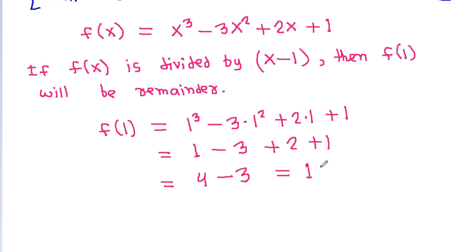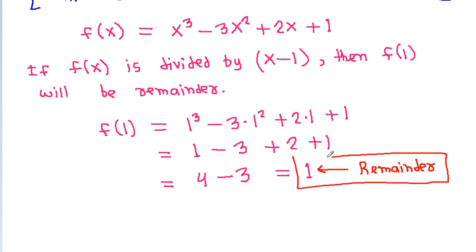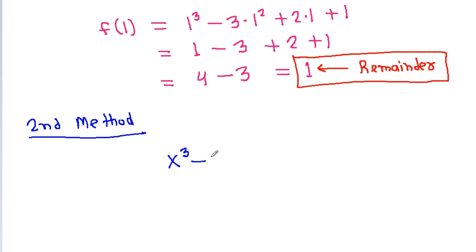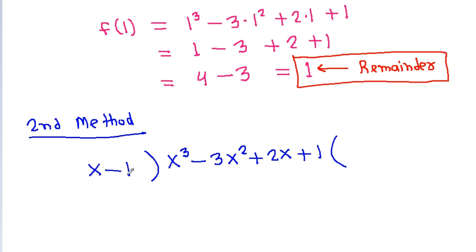So 1 is the remainder. And for the second method, we have to divide x cube minus 3x square plus 2x plus 1 by x minus 1.